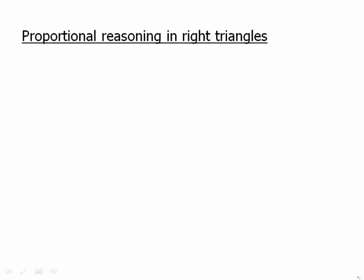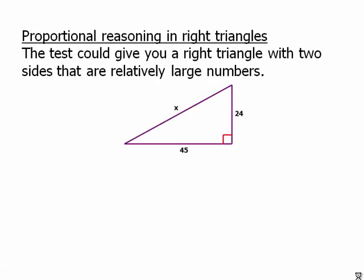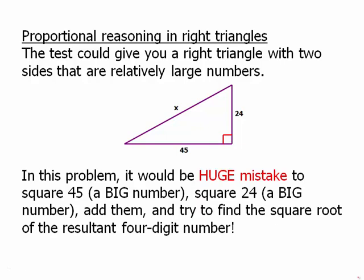Now this leads us to a discussion of proportional reasoning in right triangles. The test could give you a right triangle with two sides that are relatively large numbers. Technically, if we wanted to find x, we'd have to do 24² + 45² = x². In this problem, it would be a huge mistake to square 45, that would be some really big number, square 24, that would be another big number, add those two together and try to find the square root of the resultant four digit number. That would be a spectacularly bad idea.